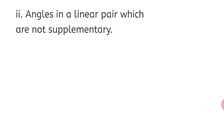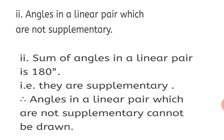Question 2: Draw angles in a linear pair which are not supplementary. We know that angles in a linear pair are always supplementary — the sum is always 180 degrees. So we cannot draw angles in a linear pair that are not supplementary. Therefore, angles in a linear pair which are not supplementary cannot be drawn. You have to justify why: because the sum of angles in a linear pair is 180 degrees, they are always supplementary.